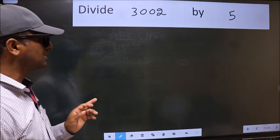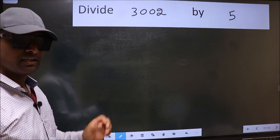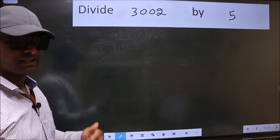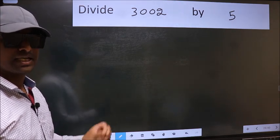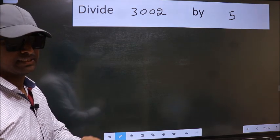Divide 3002 by 5. While doing this division, many do this mistake. What is the mistake that they do? I will let you know. But before that, we should frame it in this way.